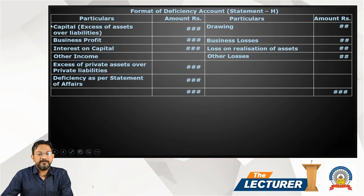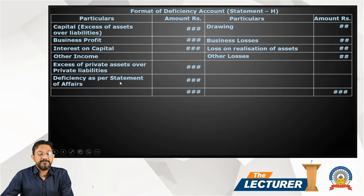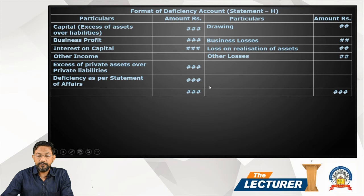On the left-hand side: capital, that is the excess of assets over liabilities — simply assets minus liabilities. Then business profit, interest on capital, other income, excess of private assets over private liabilities. Also, the deficiency at the first statement of affairs — the opening and closing margin.